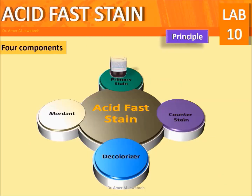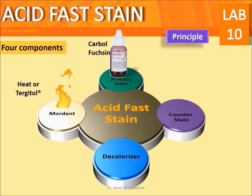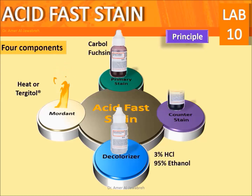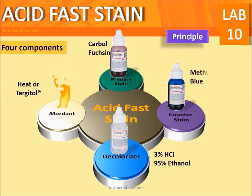The four components of the acid fast stain are: carbolfuchsin as the primary stain, heat or tergitol as the mordant, acid ethanol as the decolorizer, and methylene blue or malachite green as the counter stain.